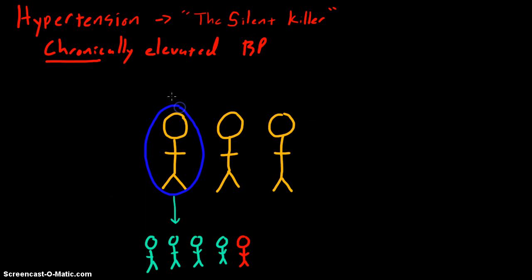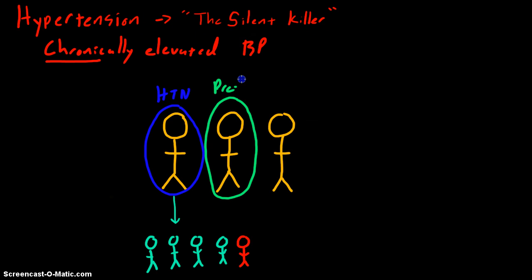Nearly one in three adults has something called prehypertension, which is another classification that we'll get to later in the lesson, but it's sufficient to say right now that it's an elevated blood pressure.